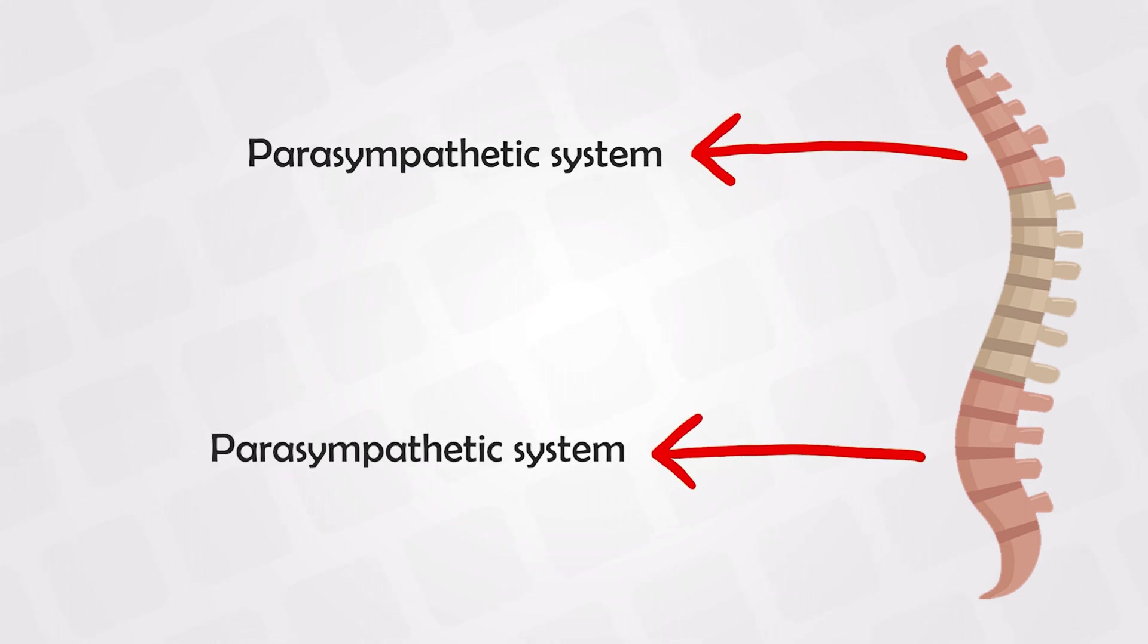The sympathetic system emerges from the spinal cord at the thoracic and lumbar area, ending around L2, so in the middle of the spine, while the parasympathetic system emerges from the cervical area or the cranium and the lower sacral area, so the upper and lower part of the spinal cord.